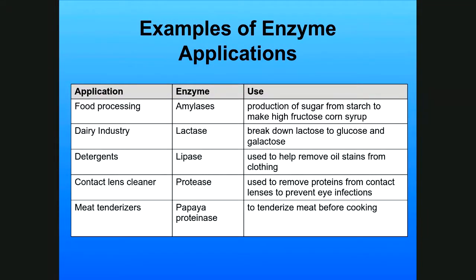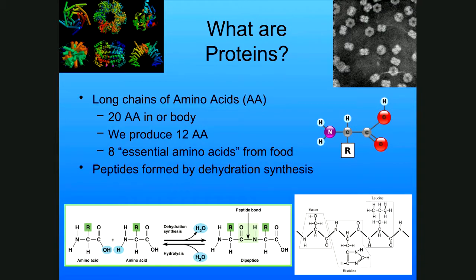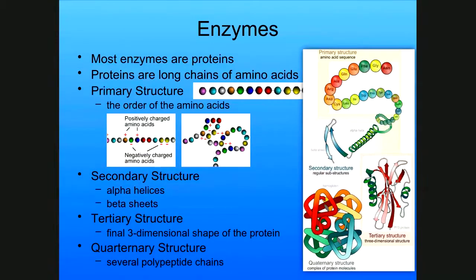Enzymes are made from proteins — chains of amino acids. There are 20 different amino acids that make millions of different rearrangements. The peptide bond is what holds them together. Enzymes are made from proteins, and there are different levels of structure to look at. The first level is the primary structure, which is just a chain of amino acids — the polypeptide chain.